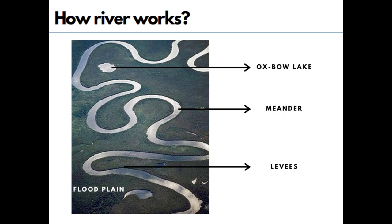When a river enters a plain region it makes sharp bends called meanders. Continuous deposition and erosion occur on a meander — erosion on the outside bend and deposition on the inside. Due to continuous erosion and deposition, the meander loop comes closer and closer and eventually cuts off from the main river. We call this cutoff lake an oxbow lake.